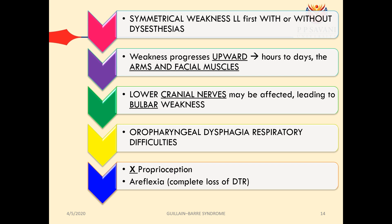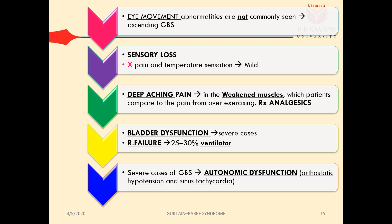The symptoms start with symmetrical weakness first in the lower limbs, with or without sensory change — initially only motor weakness, no sensory involvement. Weakness progresses upward over hours to days; the arms and facial muscles can get involved. Lower cranial nerves may be affected, leading to bulbar weakness and oropharyngeal dysphagia and respiratory difficulties. Then loss of proprioception and areflexia mark the start of sensory involvement. Eye movement abnormalities are not commonly seen in ascending GBS.